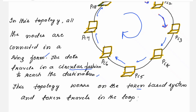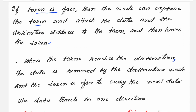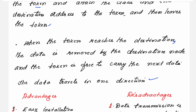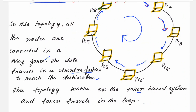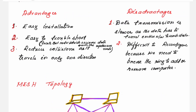The topology works on a token-based system and the token travels in the loop. If the token is free, a node can capture the token, attach the data and the destination address to it, and then release the token. When the token reaches the destination, the data is removed by the destination node and the token is free to carry the next data. The data travels only in one direction. Whichever PC holds the token can send the message, and the destination host releases the token after receiving the data. The token is a frame containing the data and destination address, and this ring topology is popularly called the token ring topology.